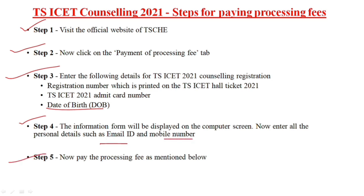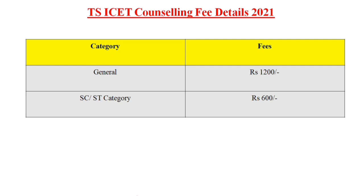Step five is to process the fee payment — you can use your debit card or credit card. The fee is divided by category: general category is 1200 rupees and SC/ST category is 600 rupees.